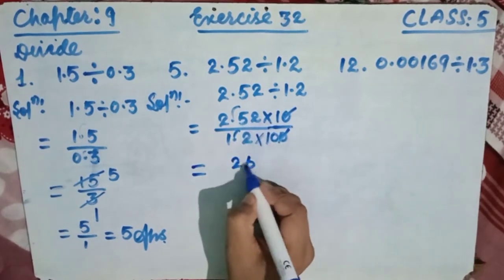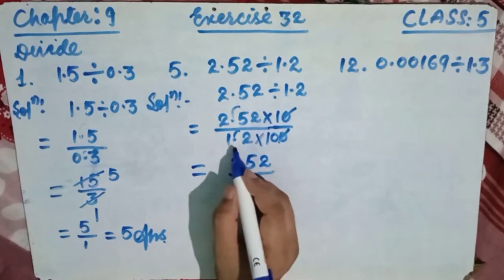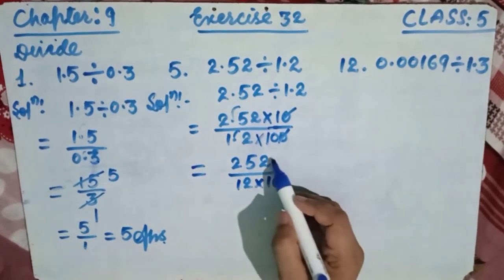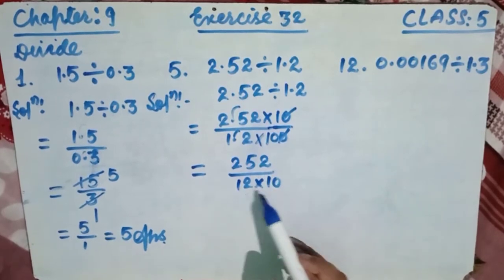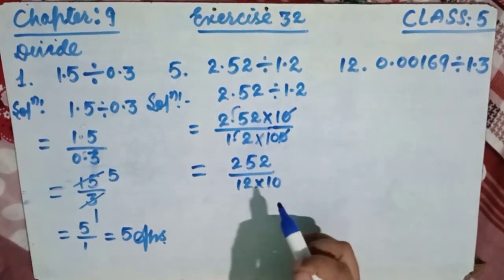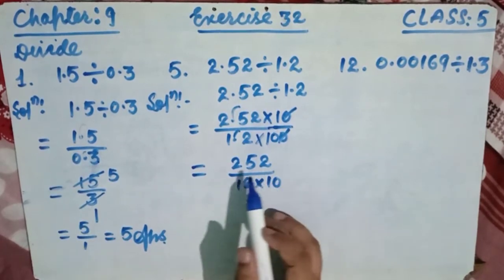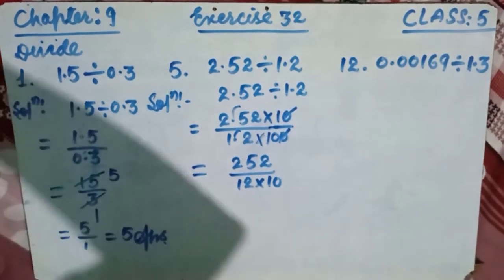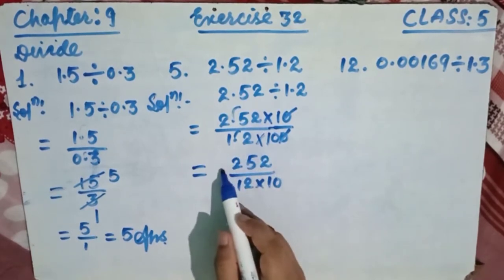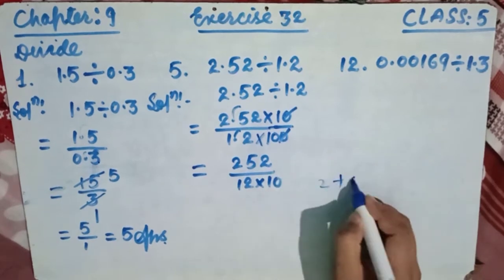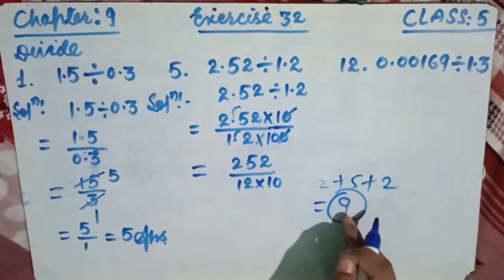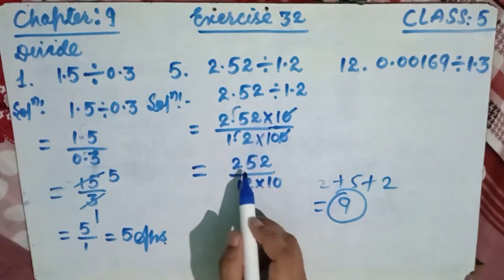This gives us 252 over 12 times 10. The zero in numerator and denominator cancel, leaving 252 over 12. Now, 252 ends in 2, so it is divisible by 2. Also, the sum of digits of 252 is 2 plus 5 plus 2 equals 9, which is divisible by 3, so 252 is also divisible by 3.